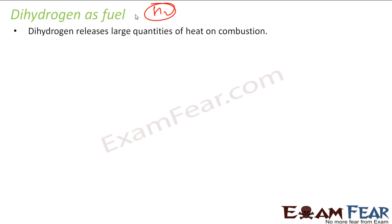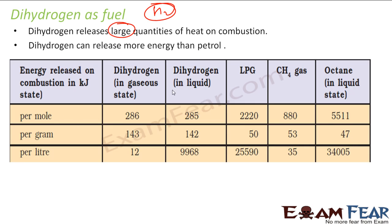We'll talk about the fuel economy and we'll see that dihydrogen releases large quantities of energy on combustion. Looking at this chart comparing petrol and dihydrogen gas, the per-mole combustion energy is more for dihydrogen. Per gram, dihydrogen gives 142 to 143 kilojoules of heat depending on state, whereas LPG gives 50, methane gives 53, and gasoline gives 47 kilojoules per gram.